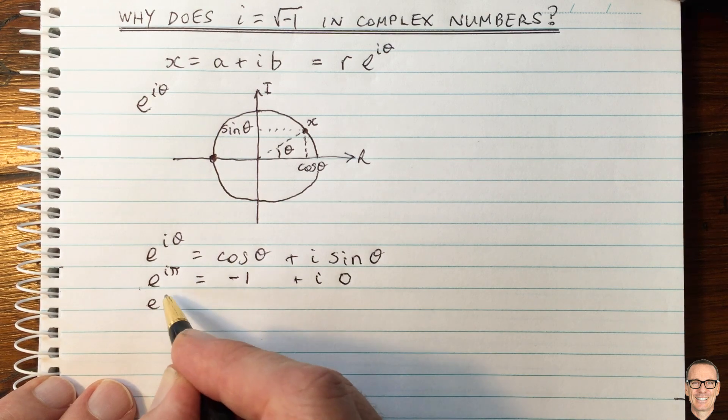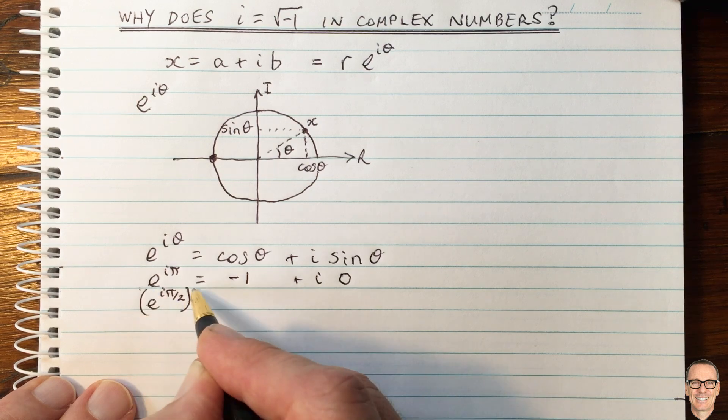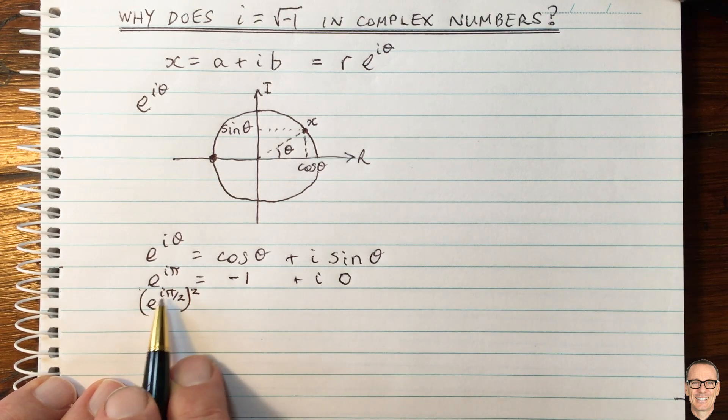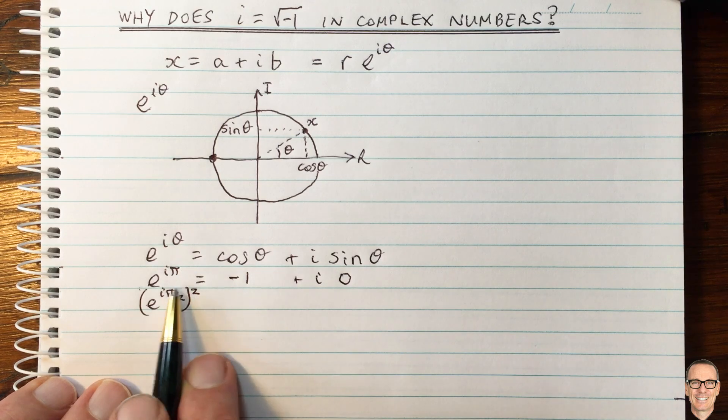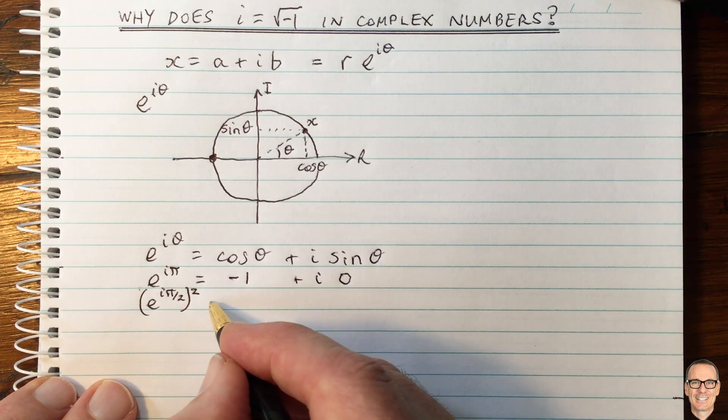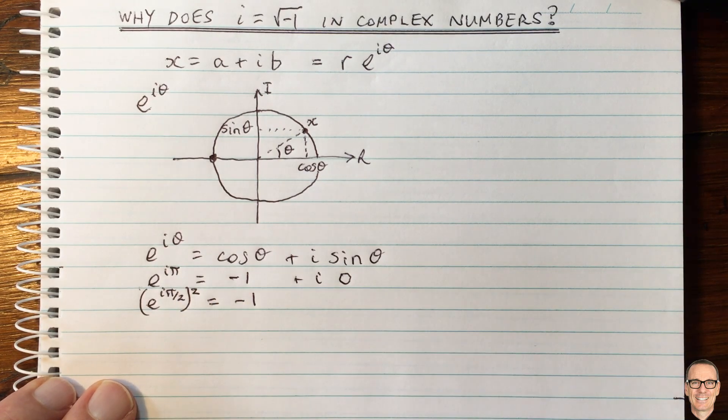We can just do e to the i pi divided by 2 all squared. So all we've done here is to divide the pi by 2 and then multiply by 2. And we can write it in this way here. And this still equals minus 1, of course.